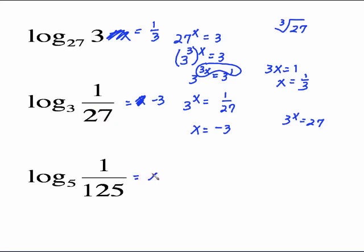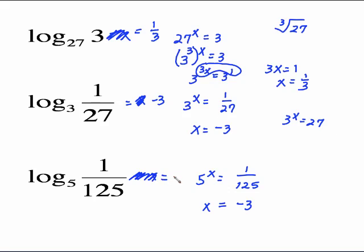Same setup: put equals x, go to exponential — 5 to the x equals 1 over 125. We've raised a whole number to a power and gotten a fraction, so the power must be negative. Look at 5 and 125: what power on 5 makes 125? That's 3. So log base 5 of 1 over 125 equals negative 3.